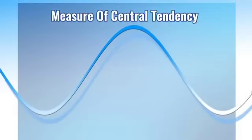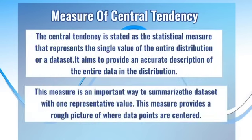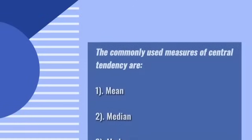Measure of central tendency. The central tendency is stated as the statistical measure that represents the single value of the entire distribution or a data set. It aims to provide an accurate description of the entire data in the distribution. This measure is an important way to summarize the data set with one representative value.